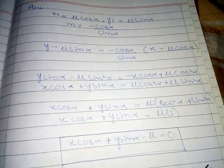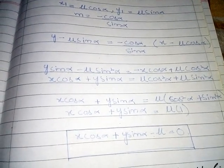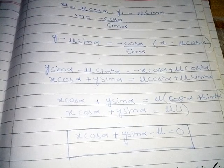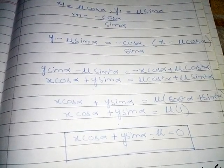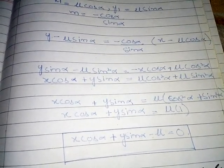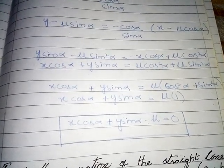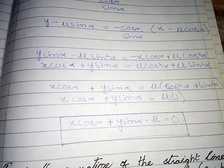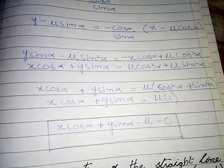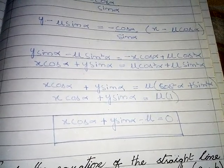Substituting: y - μsinα = (-cosα / sinα)(x - μcosα). Multiplying through by sinα: y·sinα - μsin²α = -x·cosα + μcos²α.